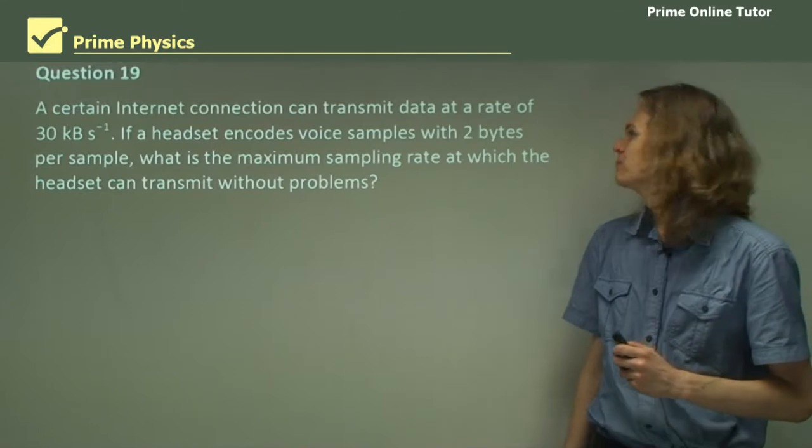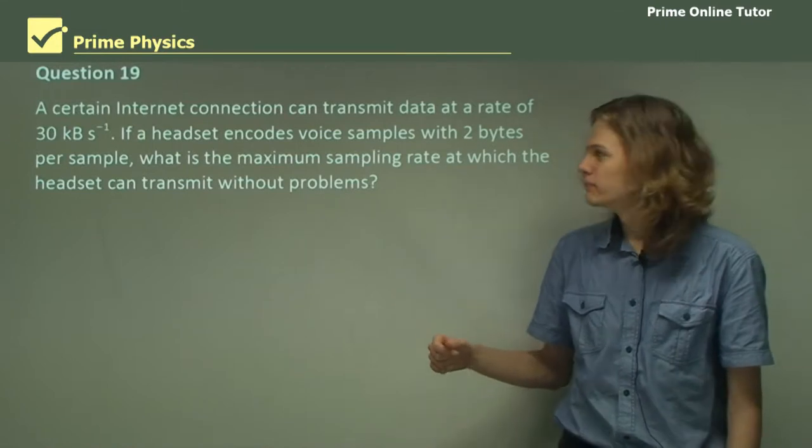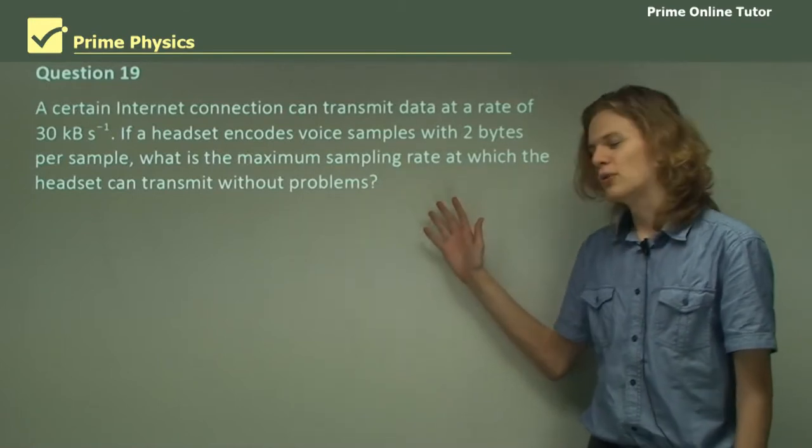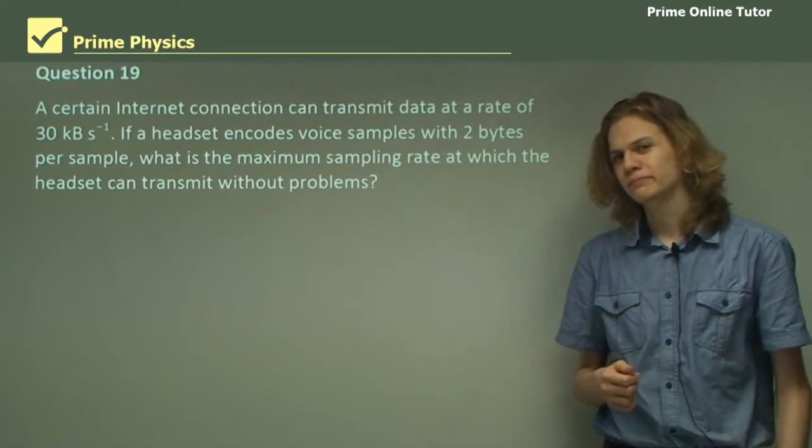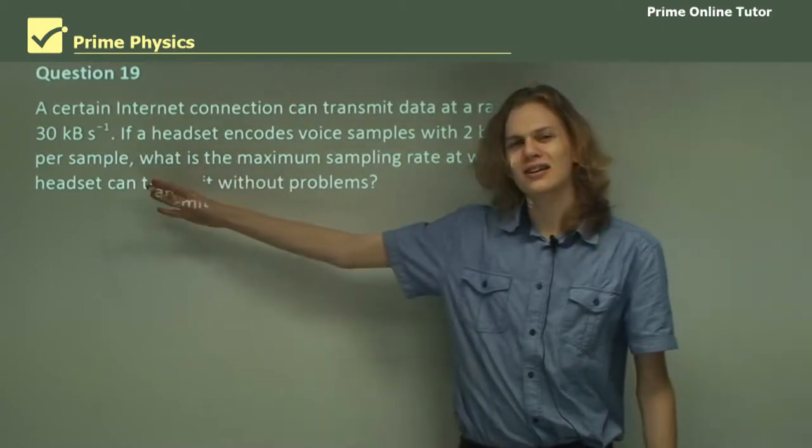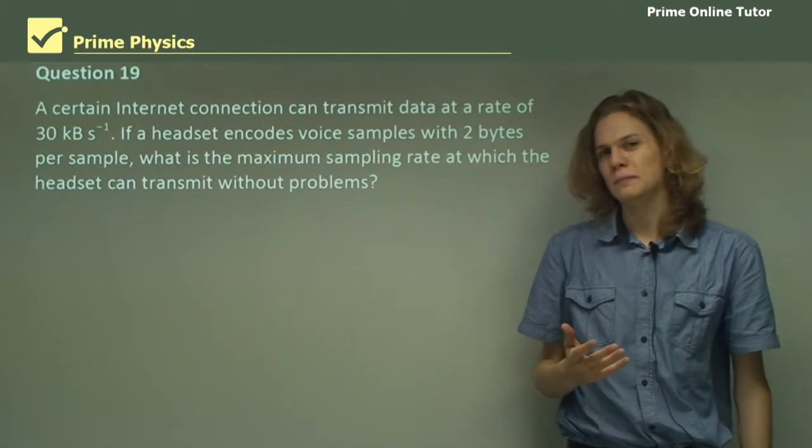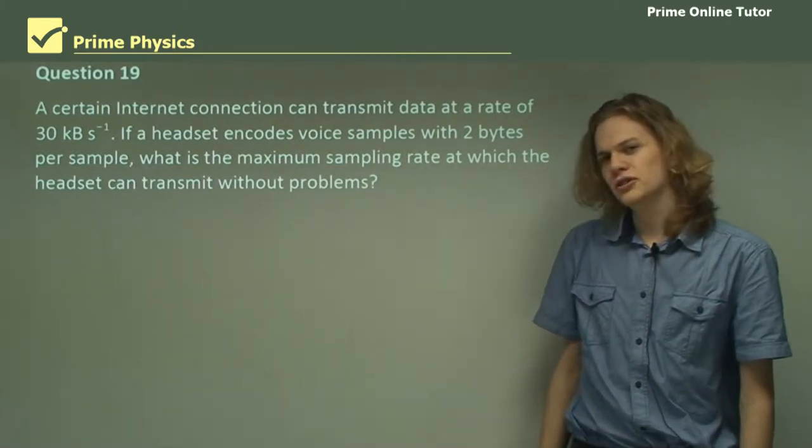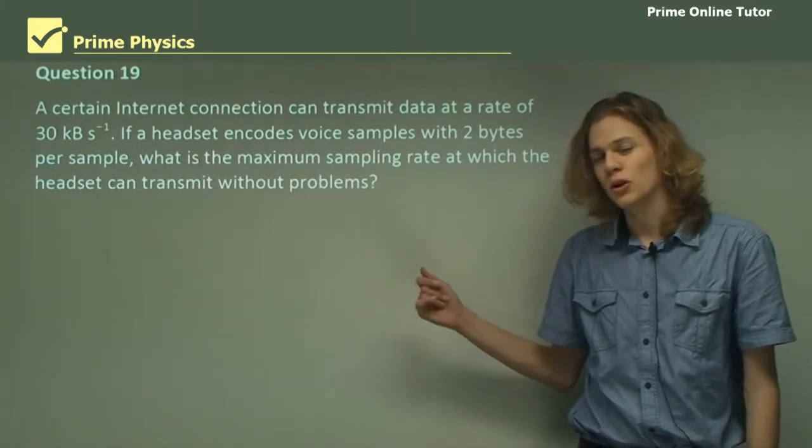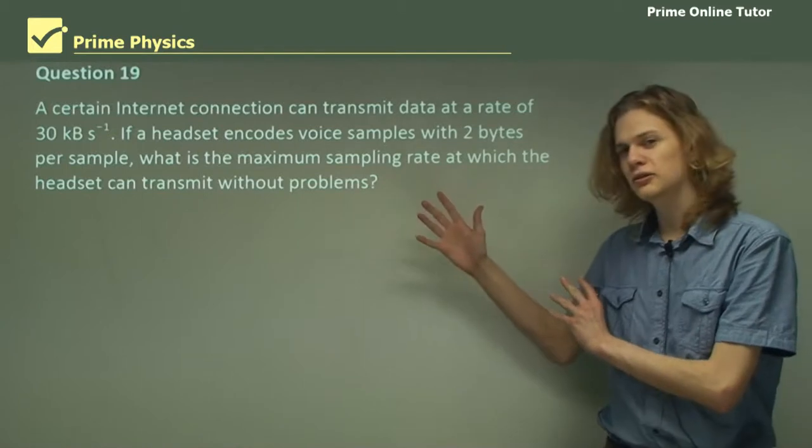Question 19. A certain internet connection can transmit data at 30 kilobytes per second. If a headset encodes voice samples with two bytes per sample, what's the maximum sampling rate at which the headset can transmit? If we transmit too many samples per second, then we'll be trying to transmit more than the internet connection is capable of. And we'll end up getting glitches or stuttering or just a failure to transmit. Alright, so let's see if we can figure this one out. How many bytes is 30 kilobytes? Well, if we say that a kilobyte is a thousand bytes, then we have 30,000 bytes per second.